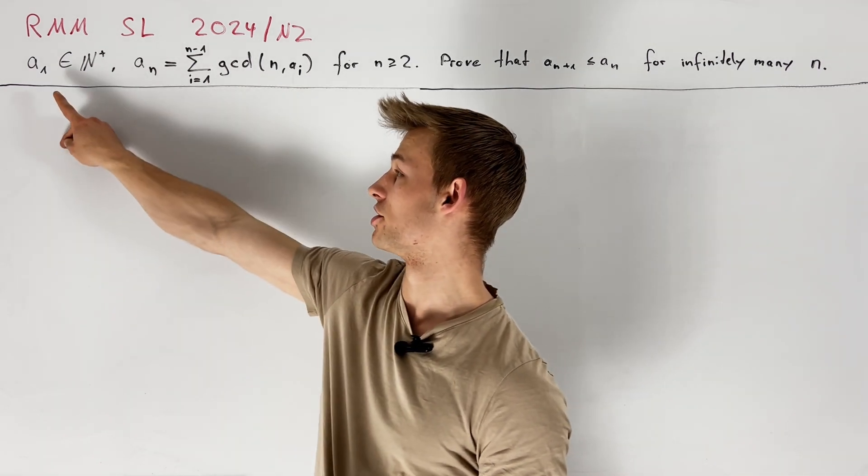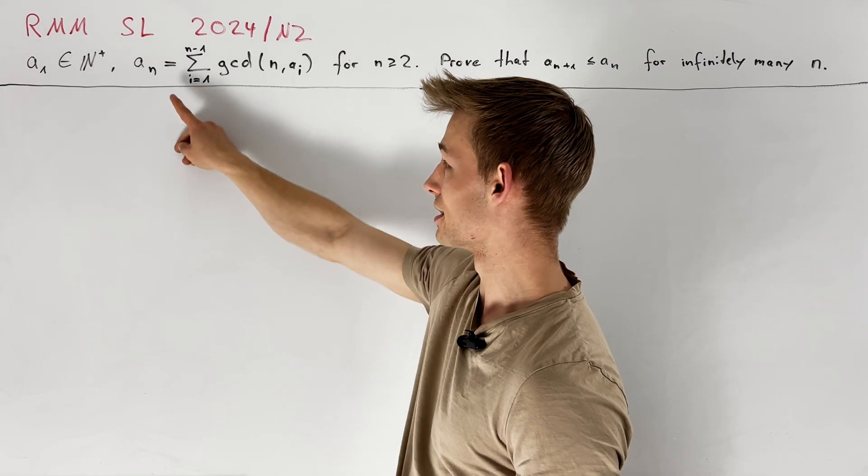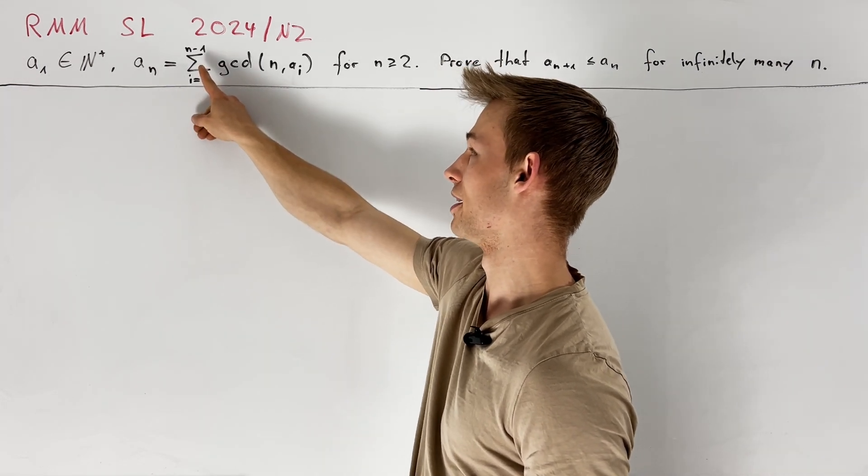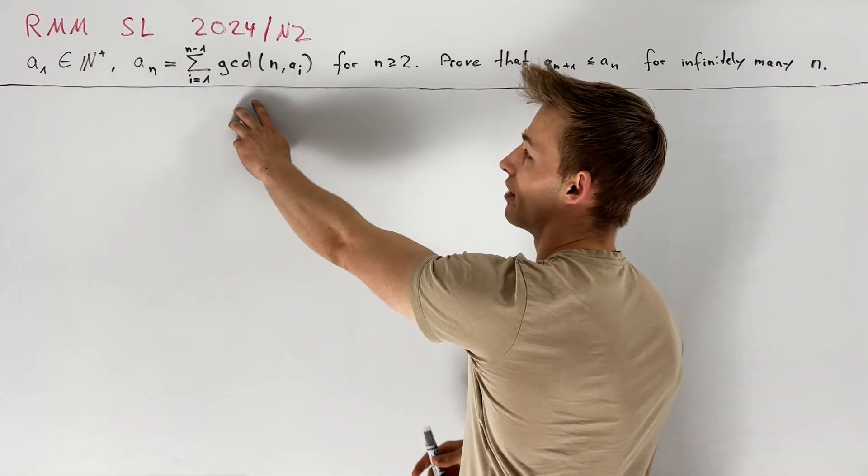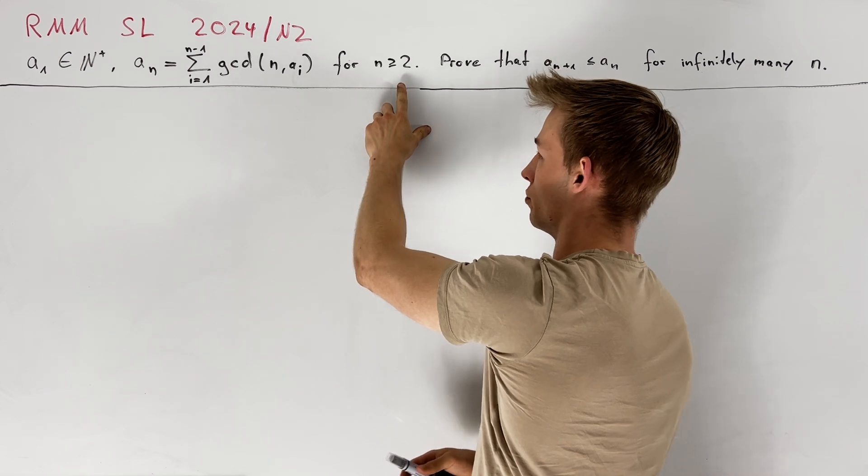We have given a positive integer a_1 and now we recursively define a sequence a_n by a_n equals the sum from i equals 1 to n minus 1 of the greatest common divisor of n and a_i, and this is defined for all n greater than or equal to 2.